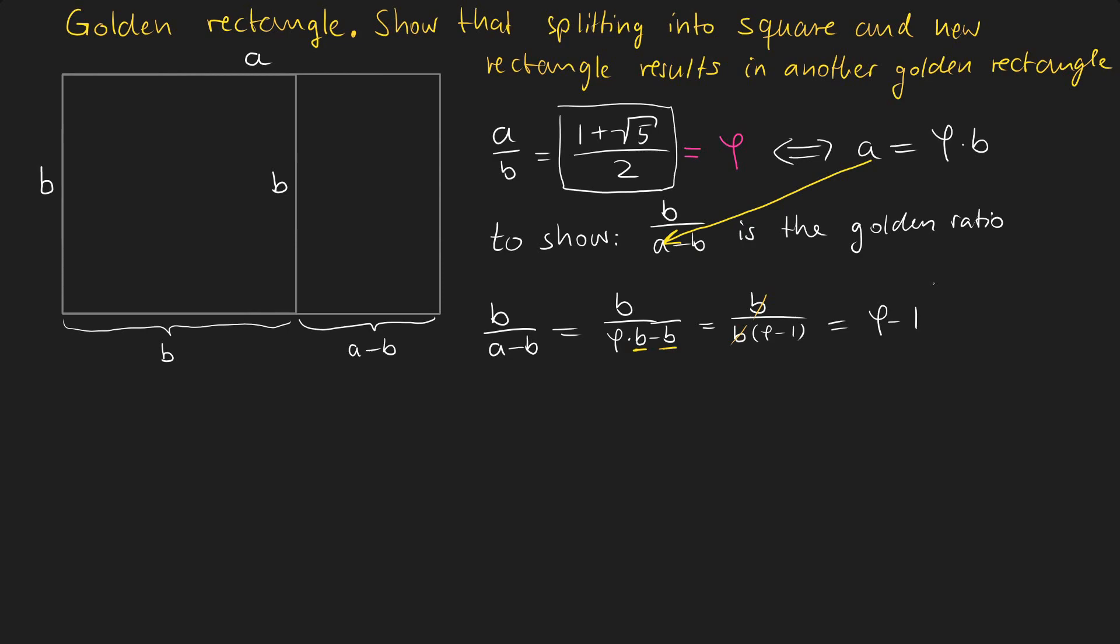Now we can replace phi with its definition again. Therefore we have 1 plus the square root of 5 divided by 2 minus 1. And now we can bring 1 onto the same denominator. So we will divide it by 2.